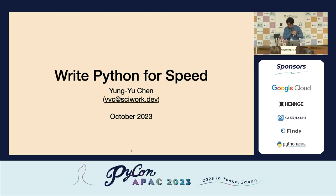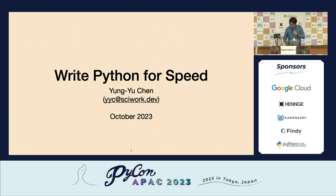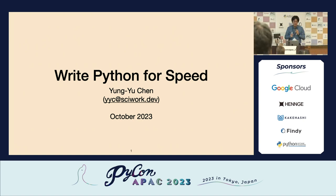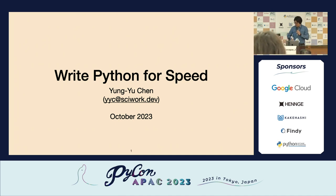I'm going to speak — my name is Yongyu Chen. You can go by YY. The title of my talk is 'Write Python for Speed.' But I'm also going to talk a lot about C++. So, spoiler alert.